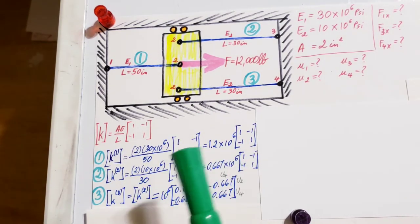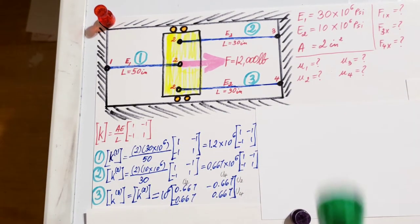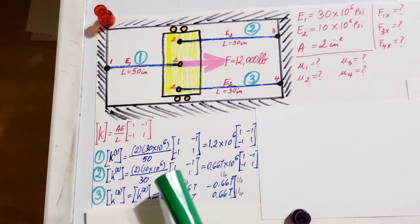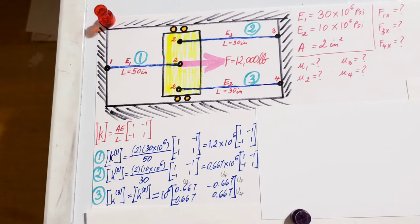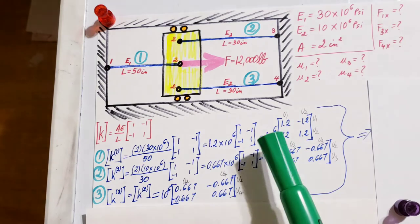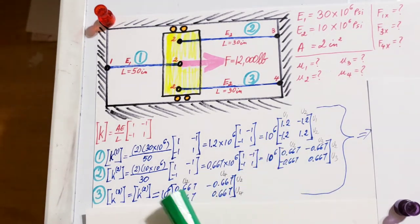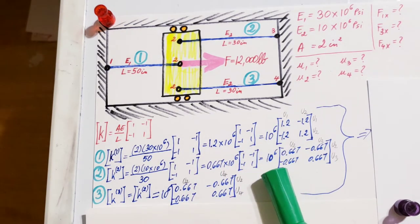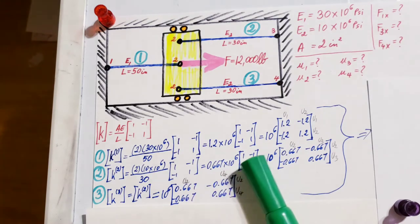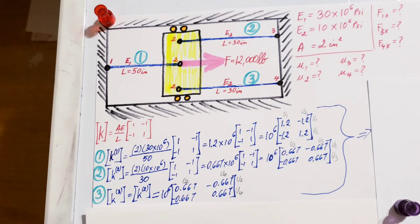Since we're combining them into our global stiffness matrix, we can see that 10^6 is common in all three. We can factor out 10^6 in front of all matrices, and put everything else inside the matrix. Our global stiffness matrix will look much prettier.